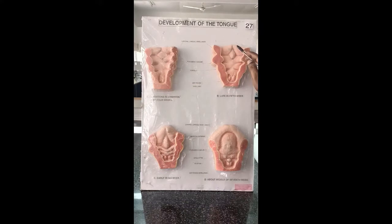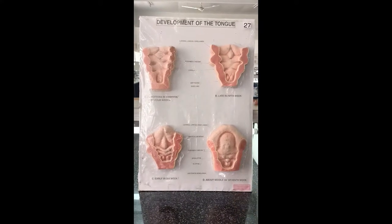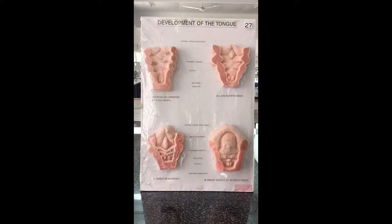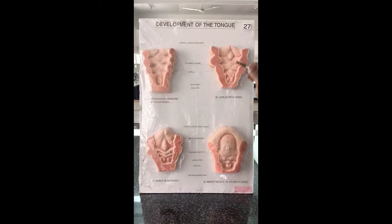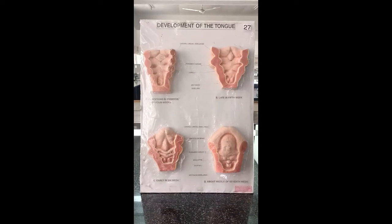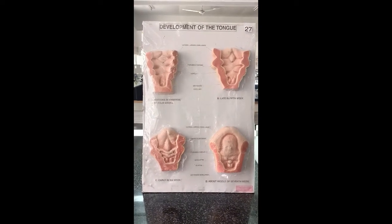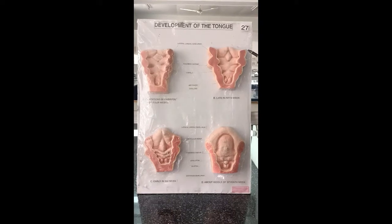The two lingual swellings and tuberculum impar are derived from the first pharyngeal arch. Because of that, the anterior two-thirds of the tongue is supplied by the lingual nerve, which is a branch of the mandibular nerve, along with the chorda tympani — one is pre-sulcal and another is post-sulcal.